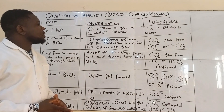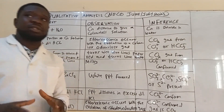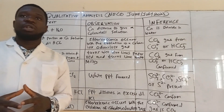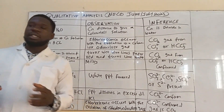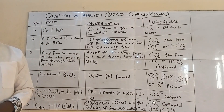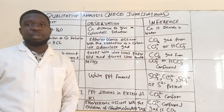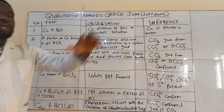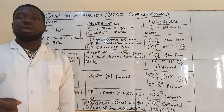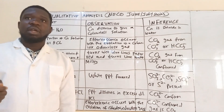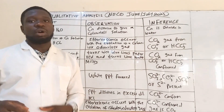For the sodium ion, it cannot be analysed by using the normal reagents we have in the lab at this stage. The only way you can analyse it in the lab with the normal reagents is by using the flame test. So when you heat the sample salt, it will give a characteristic bright yellow light.